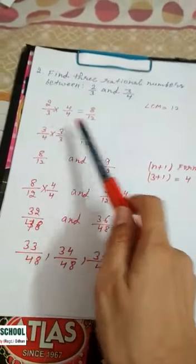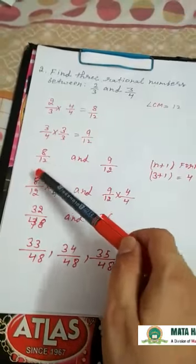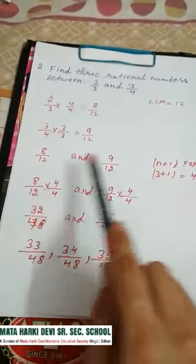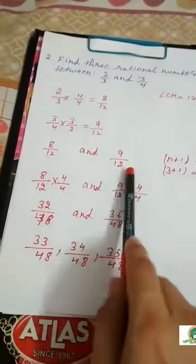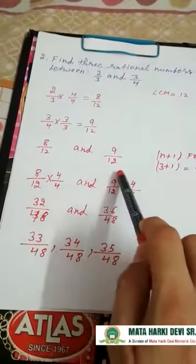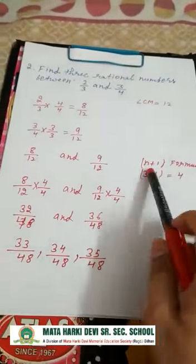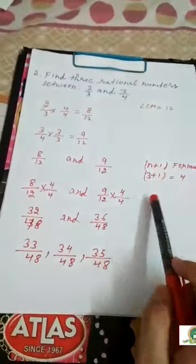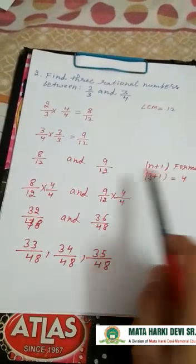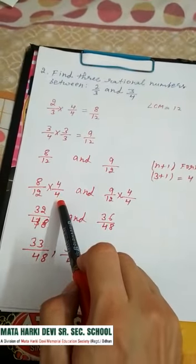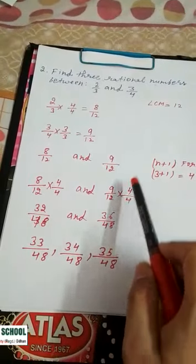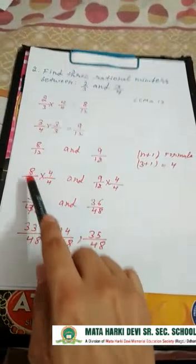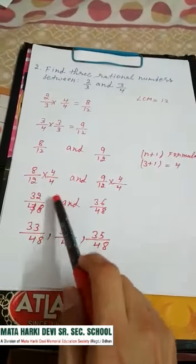Now we have 8 by 12 and 9 by 12 — denominators are same. Then use the n plus 1 formula: 3 plus 1 is equal to 4. Multiply 4 to numerator and 4 to denominator on both sides. So 8 fours are 32, 12 fours are 48. And 9 fours are 36, 12 fours are 48. This gives 32 by 48 and 36 by 48.